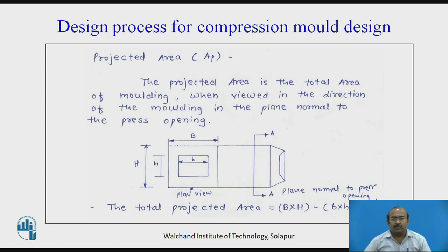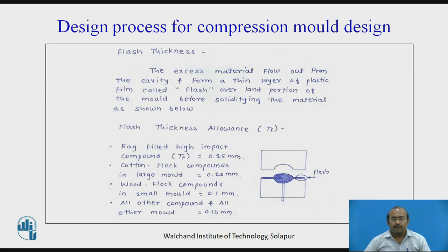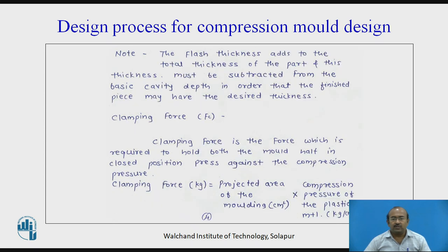Projected area is the total area of the molding when viewed in the direction of the molding in the plane normal to the press opening. The total projected area for this particular figure is capital B into H minus small b into H. This is the plane normal to the opening. Flash thickness — the excess material flows out from the cavity and forms a thin layer of plastic film called flash over the land portion of the mold before solidifying. The flash thickness adds to the total thickness of the part, and this thickness must be subtracted from the basic cavity depth so that the finished piece may have the desired thickness.